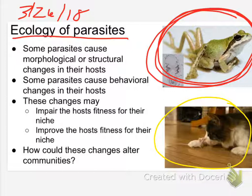How could that alter a biological community? There's a lot of potential there. These are not the only two parasites that make changes in the host — changes in either behavior or structure. There's this trickle-down effect where one little parasite in the bloodstream of a bunch of individuals can cause pretty widespread change. I'm going to cut this off here and switch gears.